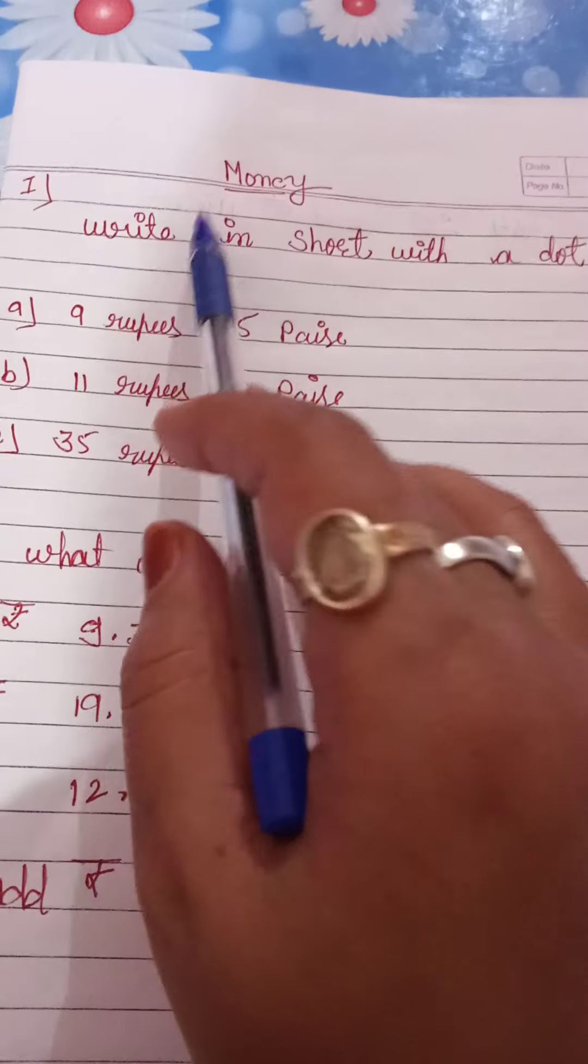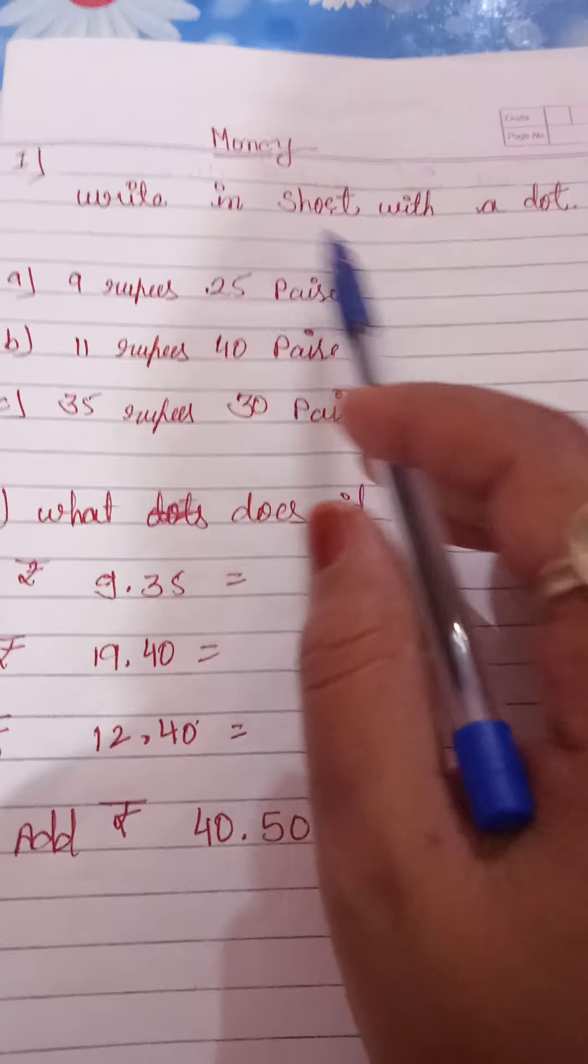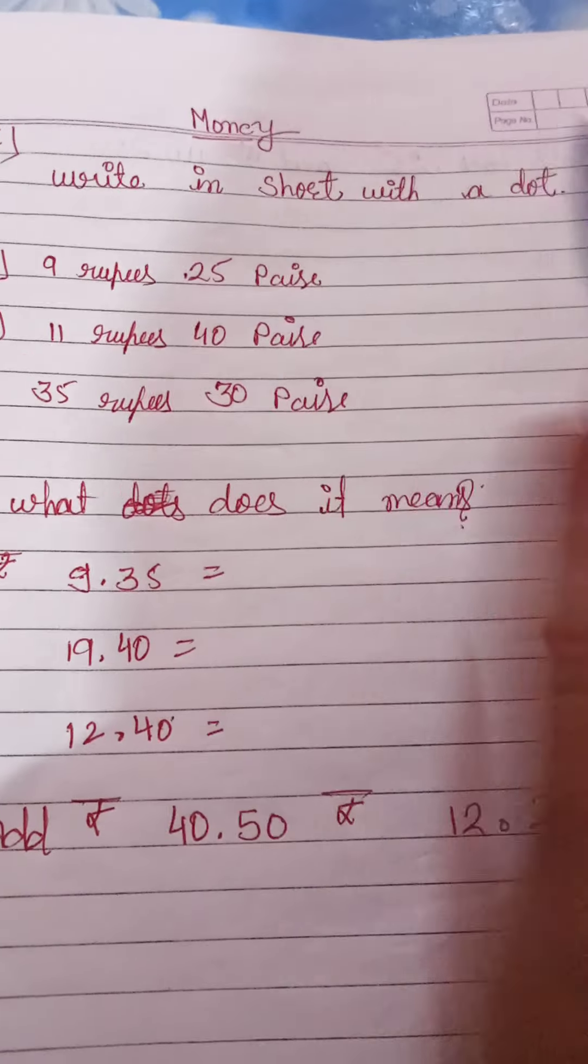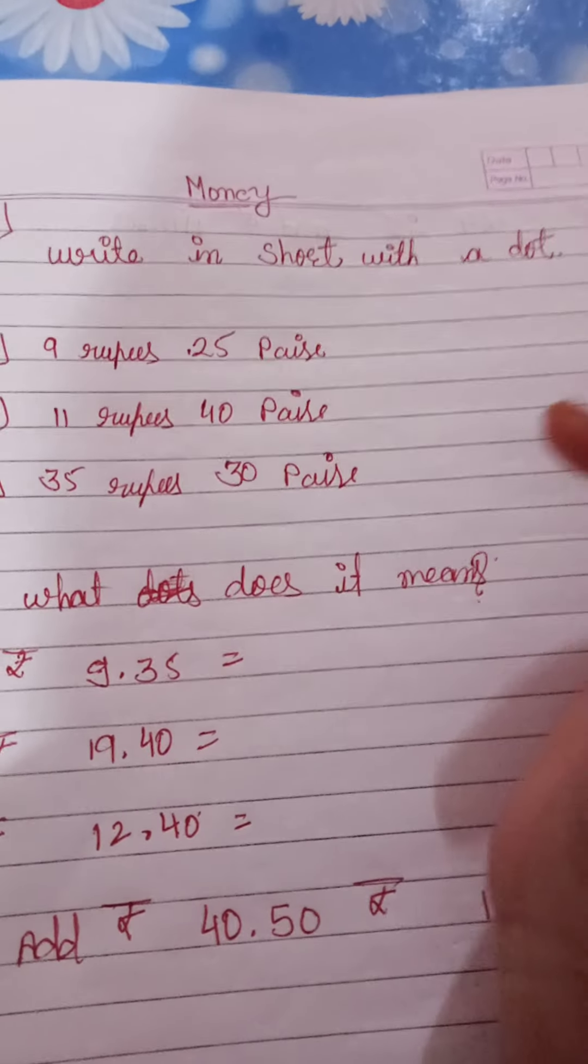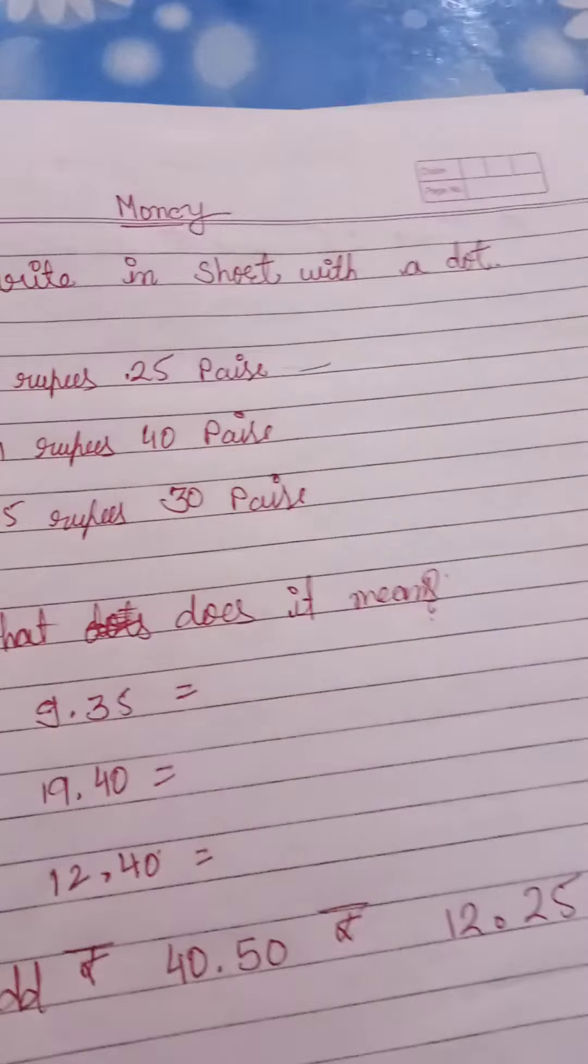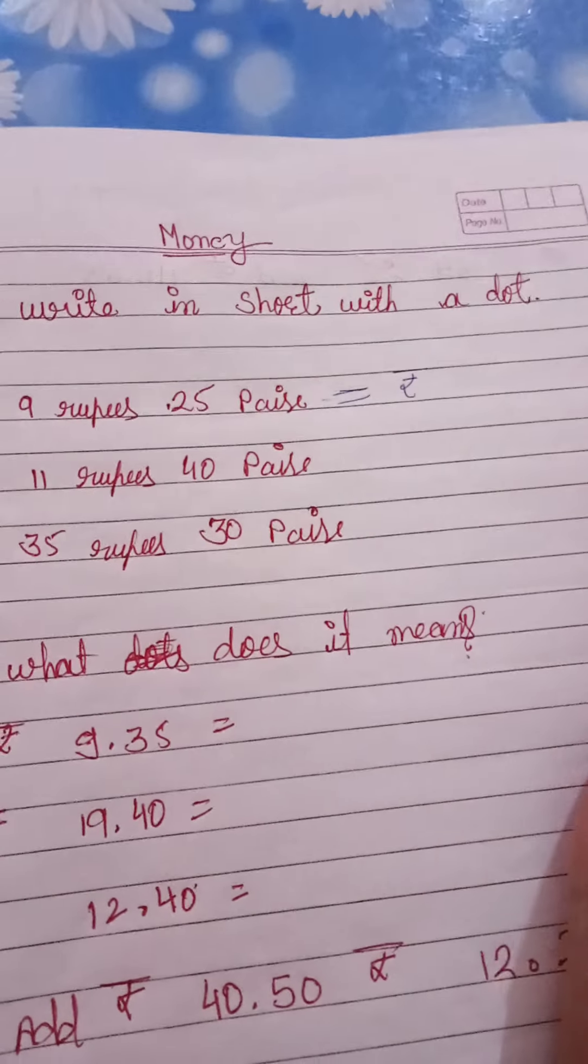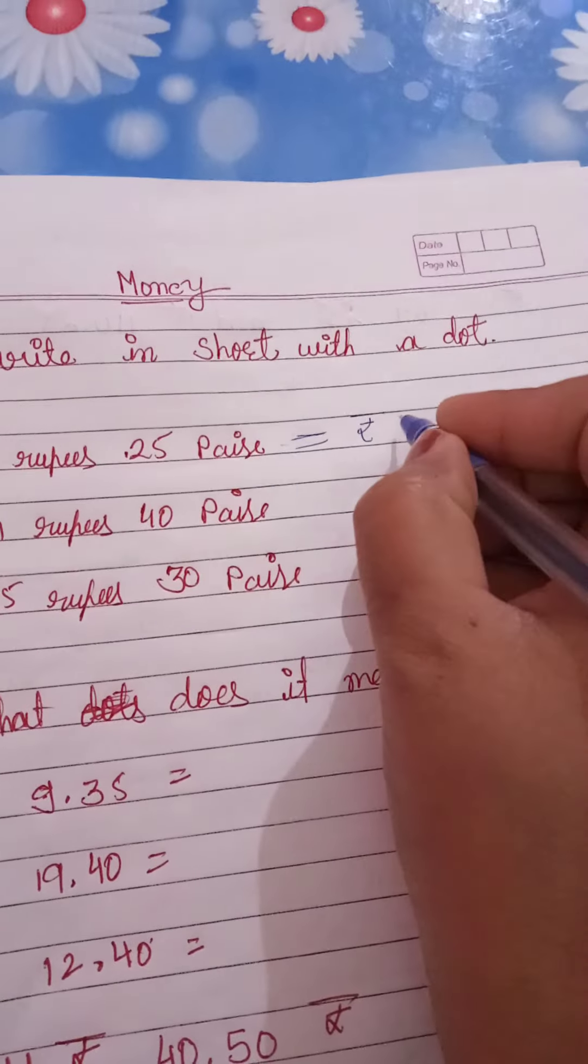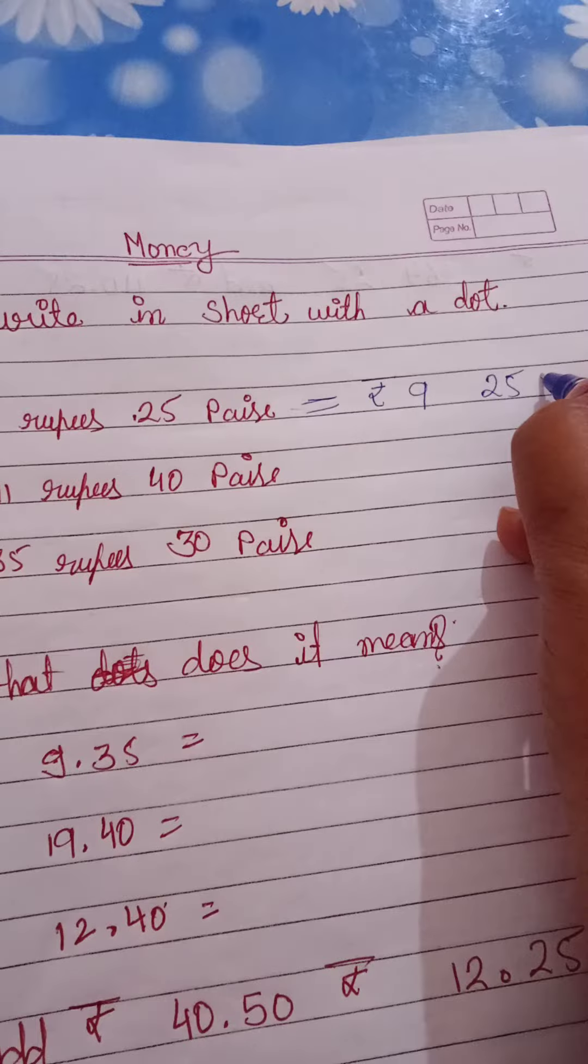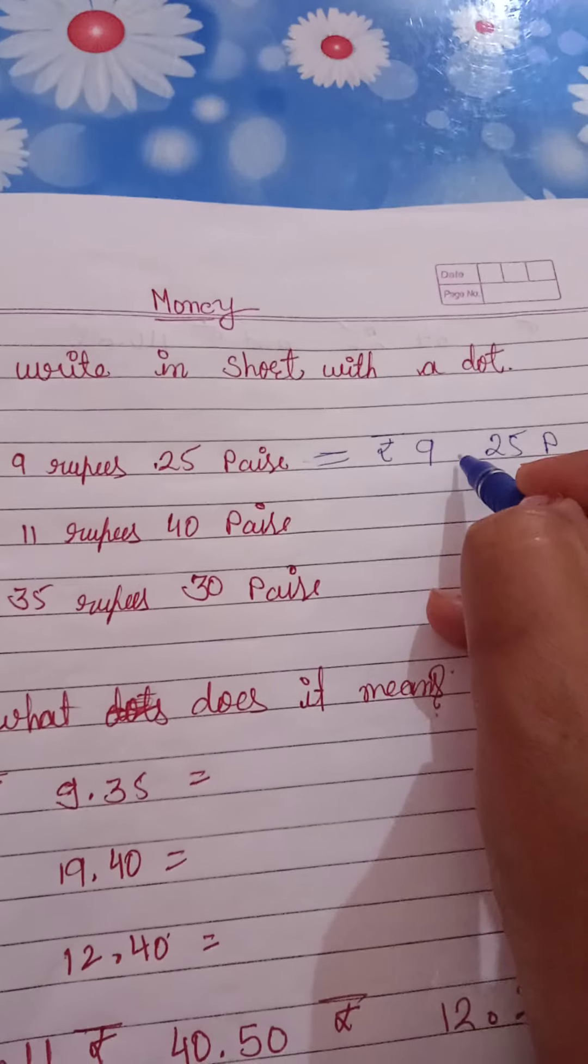Let's start. Money - write in short with the dot. You have to write in short. So 9 rupees 25 paise, you have to write in short, so start. 9 rupees, and this is the new sign of rupees, so rupees 9 and 25 is paise. Okay, so let's start, you have to put a dot also.